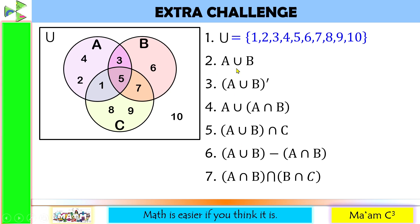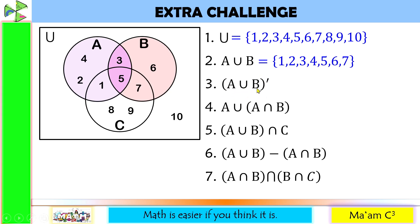Number 2: A union B. We remove the shade in set C. So A union B contains 1, 2, 3, 4, 5, 6, and 7. Number 3: (A union B) prime. We work first at the innermost group — A union B — which we already have. Since it says prime, we find the elements in the universal set not found in A union B. So (A union B) prime is {8, 9, 10}.